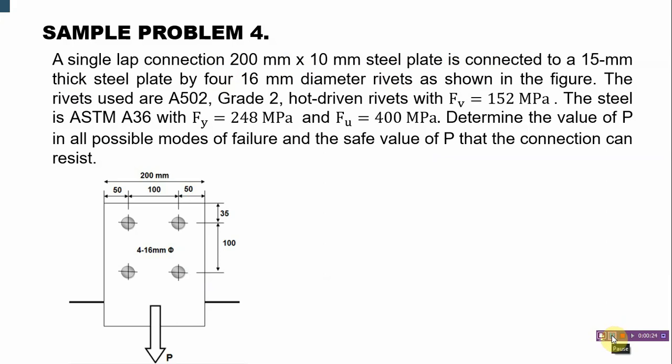A single lap connection — a 200mm by 10mm steel plate is connected to a 15mm thick steel plate by four 16mm diameter rivets. The rivets are A502 Grade 2 hot-driven rivets with allowable shear stress of 152 MPa. The steel is ASTM A36 with F_y = 248 MPa and ultimate tensile strength F_u = 400 MPa. Determine the value of P in all possible modes of failure and the safe value of P the connection can resist.